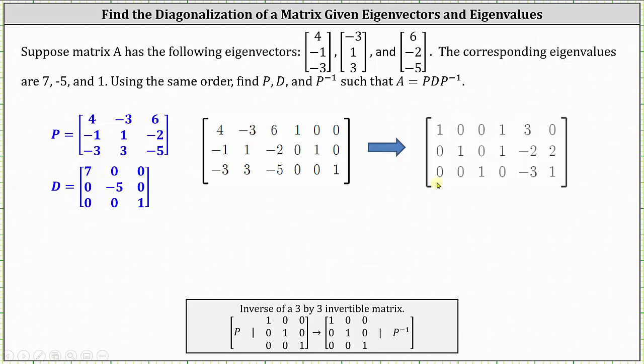So I've already done all the row operations and this is the result. Notice how we have the three by three identity matrix on the left, the inverse of matrix P is on the right. The inverse of matrix P is the three by three matrix where the entries are one, three, zero; one, negative two, two; and zero, negative three, one, which is listed here at the bottom.